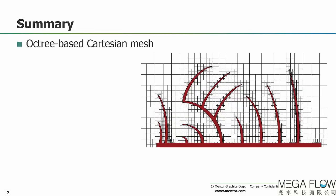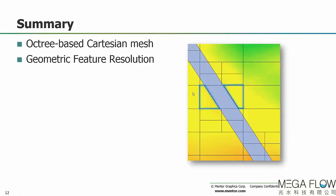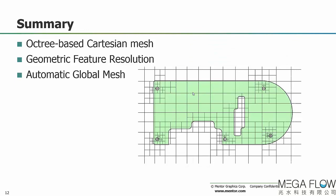Before opening up for questions, here is a summary of the major points. Flowtherm XT uses an octree-based Cartesian mesh where the base mesh is Cartesian and cells are refined — one cell becoming eight — as you near the geometry to more accurately resolve the geometry and physics. When Flowtherm XT encounters a cell containing both solid and fluid, it's a cut cell, which is then split into areas of solid and fluid that take the shape of the geometry and are no longer necessarily Cartesian.